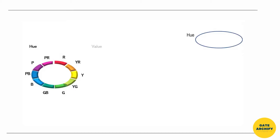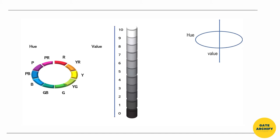Next is value. Value is measured vertically on a cylindrical core from black to white, numbered from 0 to 10. Black is at 0 and pure white at 10. Colors with no hue are achromatic colors, while colors with hue are chromatic colors.